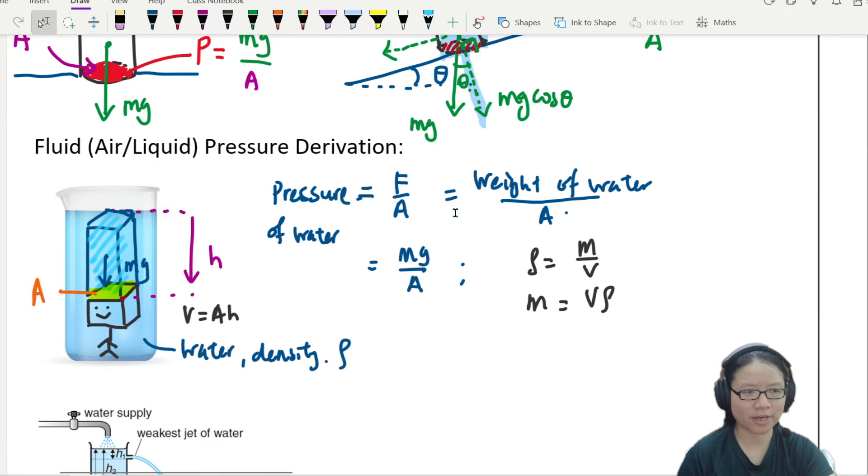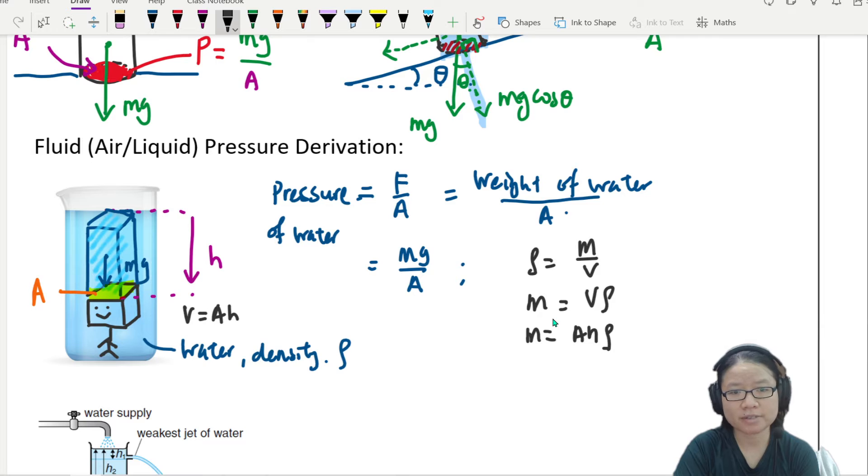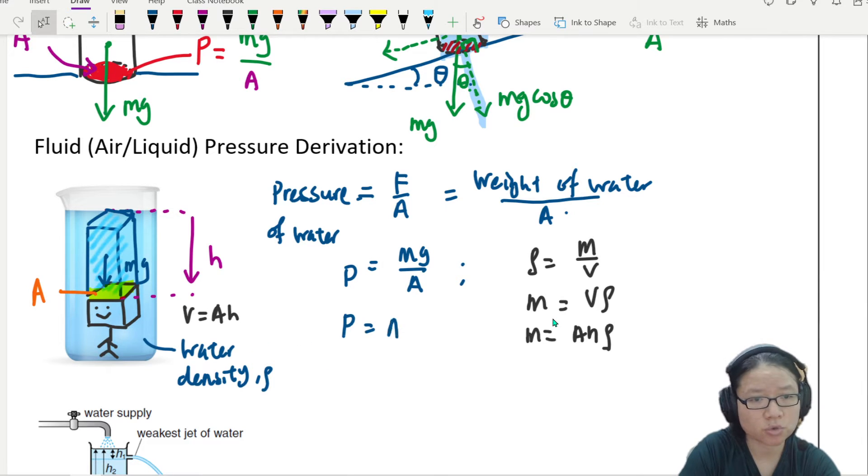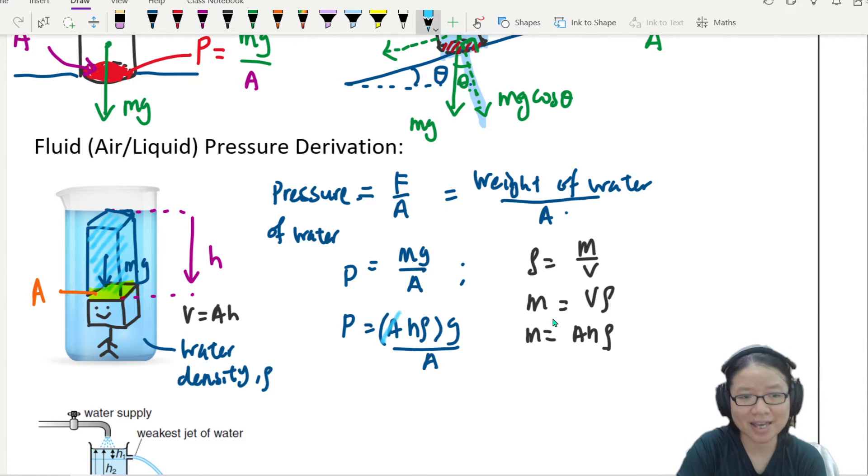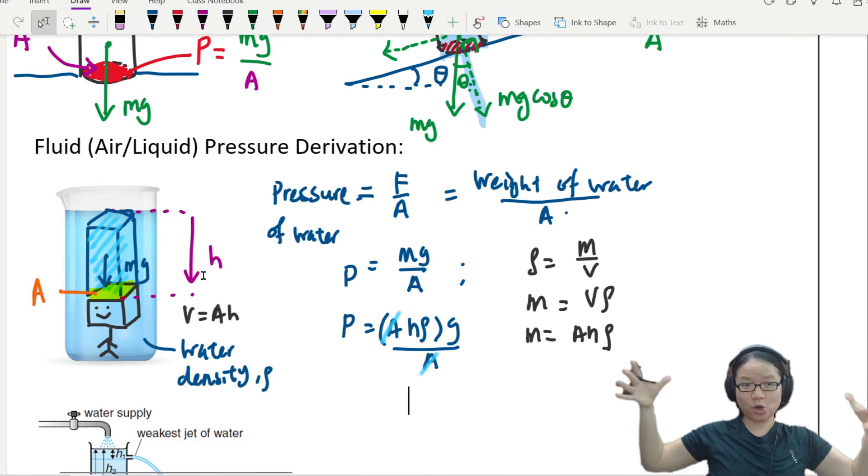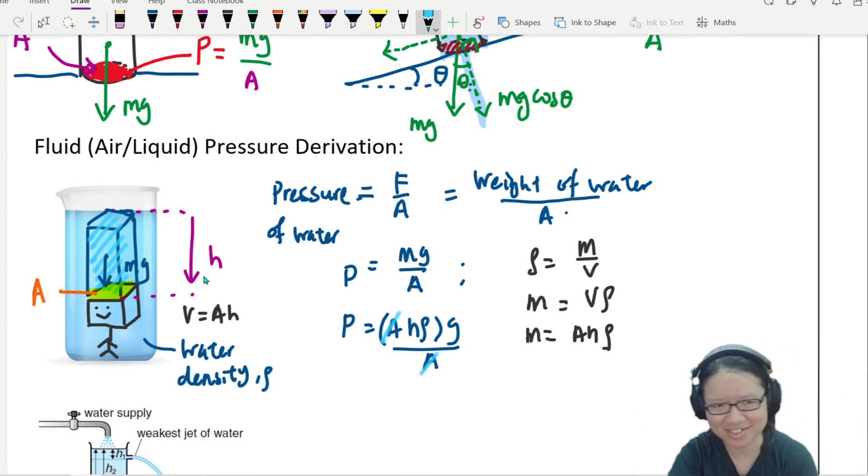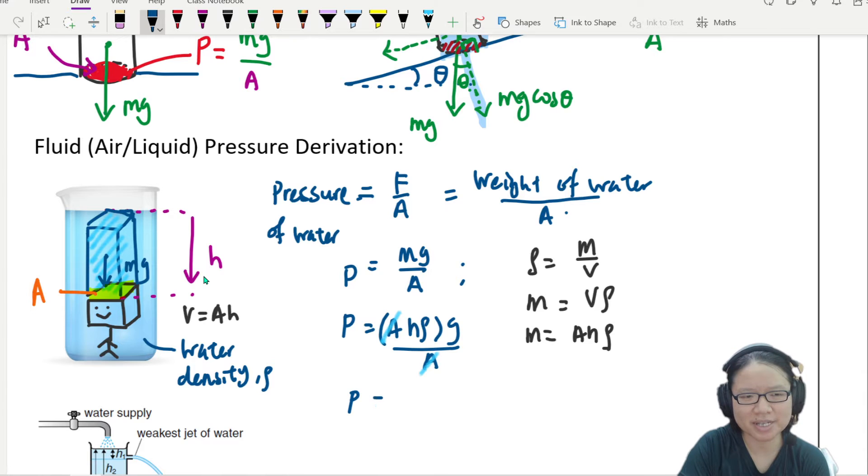So from here, if I want to find mass, I will take volume times density. But also at the same time, if I think about volume, which is the volume of that water column, what is that water column? The volume is equal to ah, yes, A times H. The area multiplied by the height. So I'm going to put this AH inside, AH times density. Now I'm just going to throw that in.